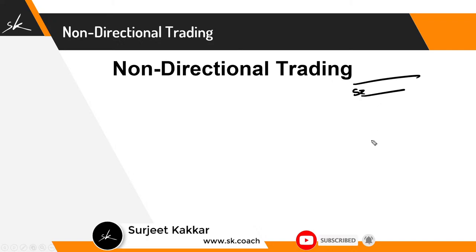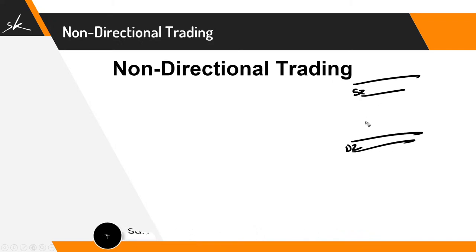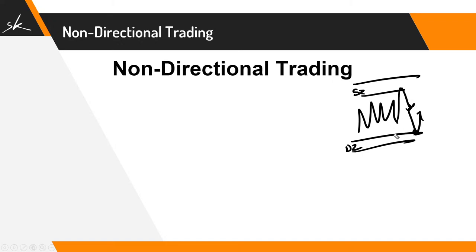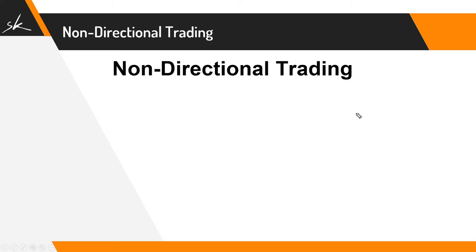Let's say I have an area of supply and an area of demand, and what I'm expecting is that until expiry prices would remain within this range — from supply the prices hit and go down, and if they hit the demand prices can move up. So if my outlook is that by expiry prices can remain within this range, that is where we start planning non-directional trades. I plan my trades based on demand and supply.